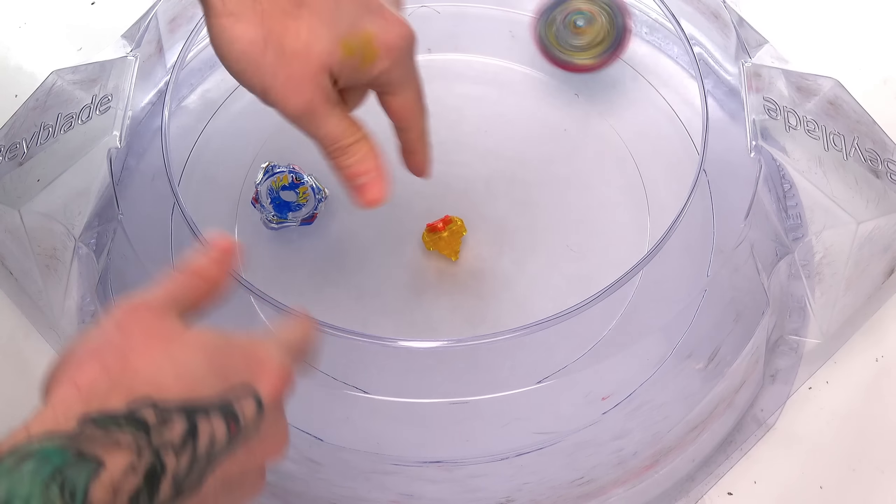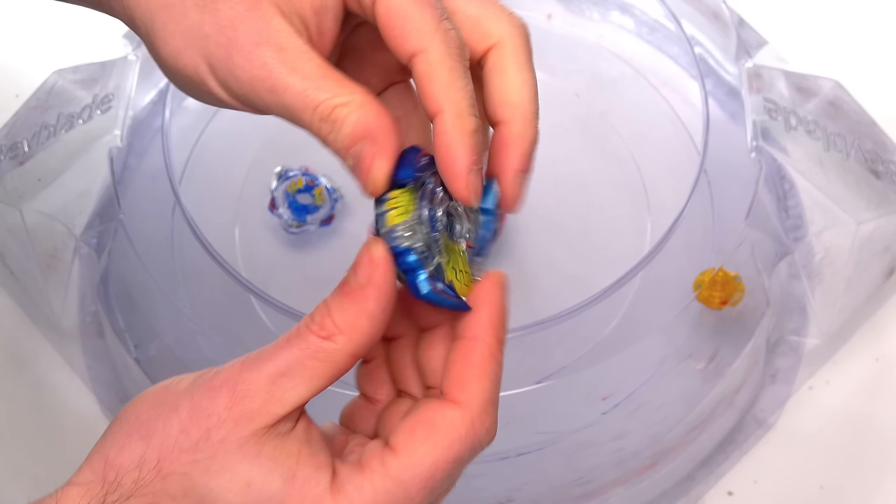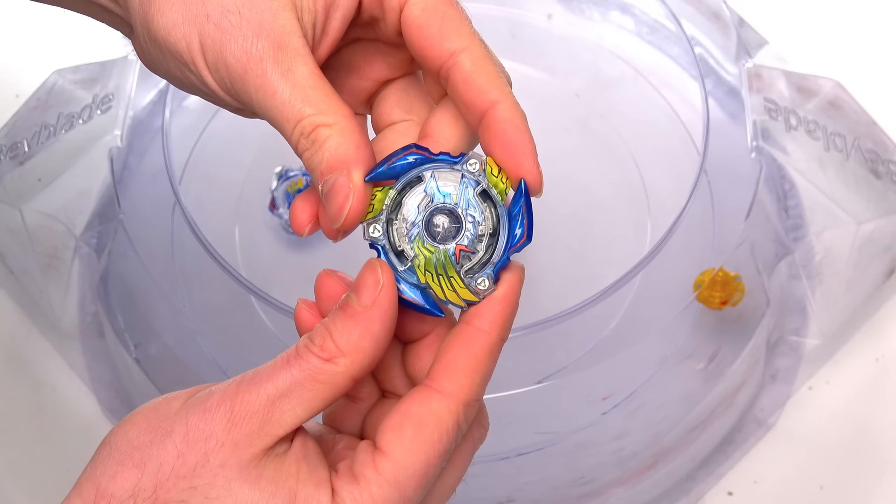You guys know the rules, you burst you lose, it's always first two points man. All right guys, first evolution done pretty well. How well can the dual layer Victory Valkyrie do now? 3, 2, 1. Okay guys and we are off with the second battle.